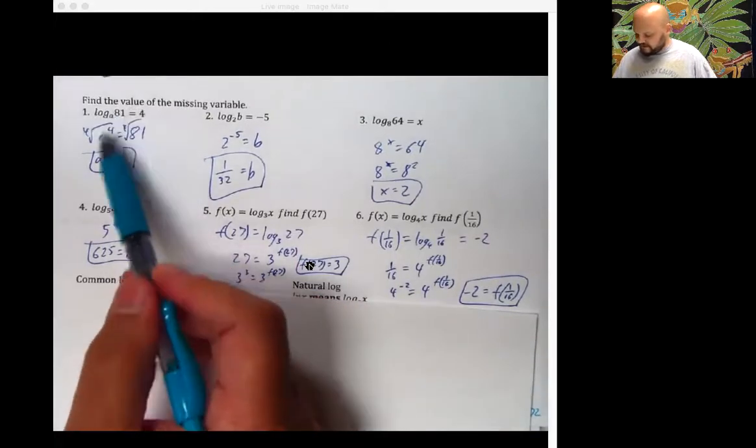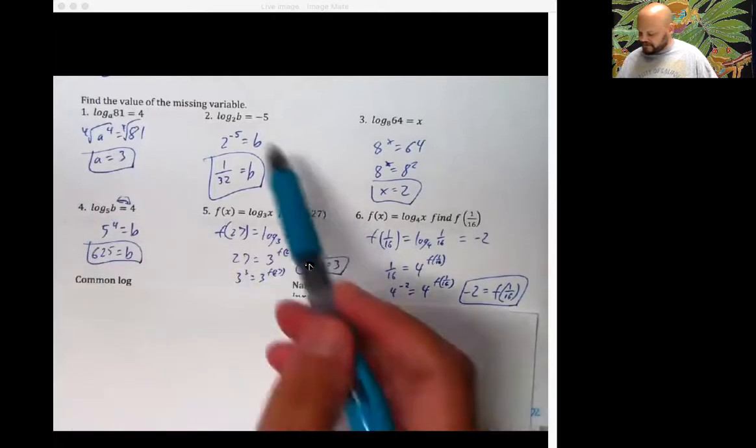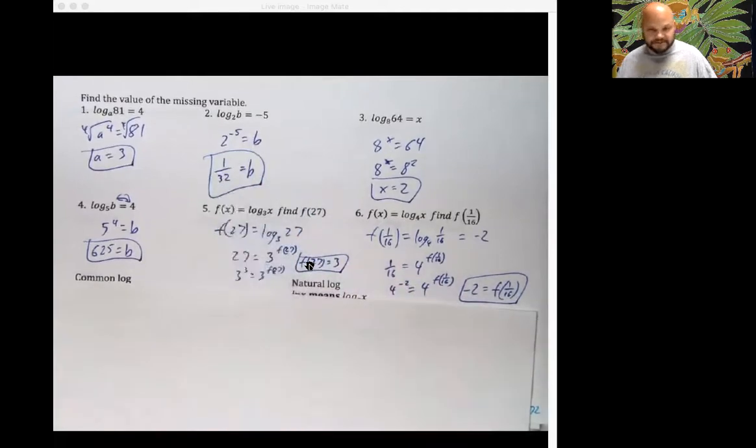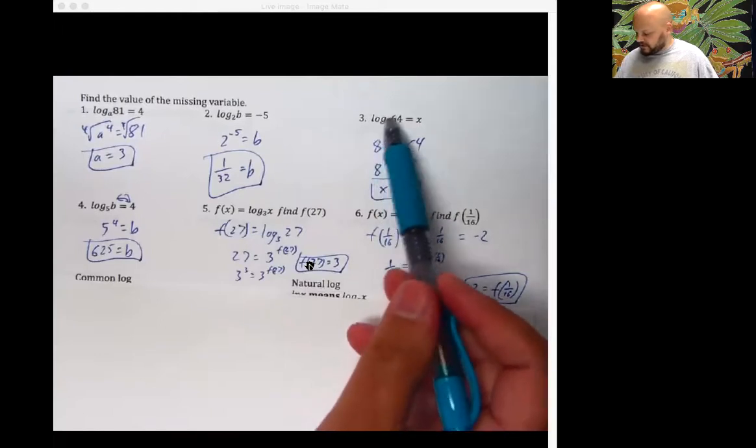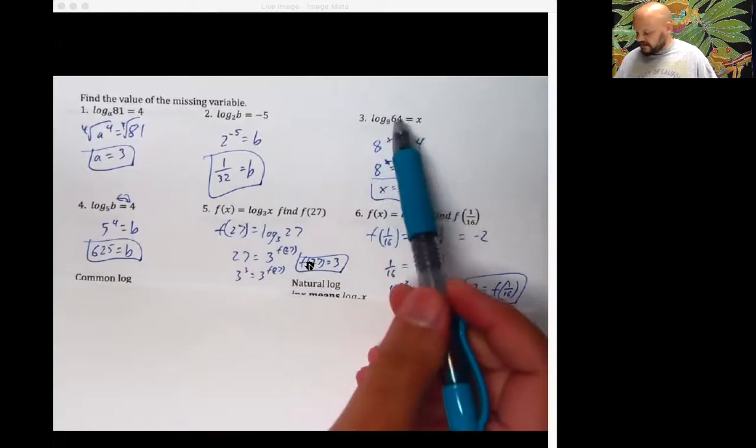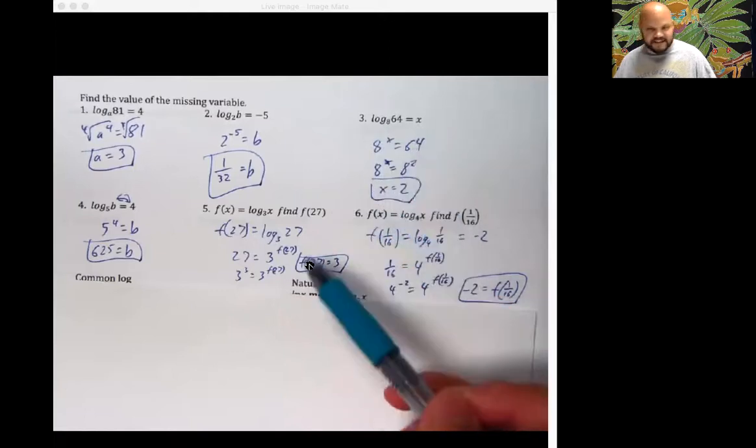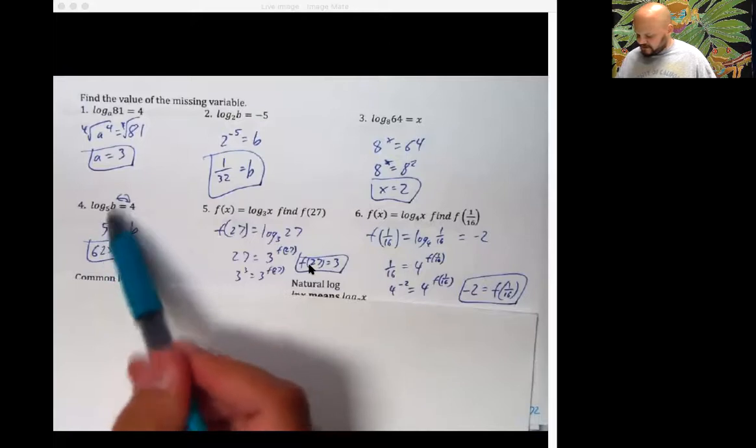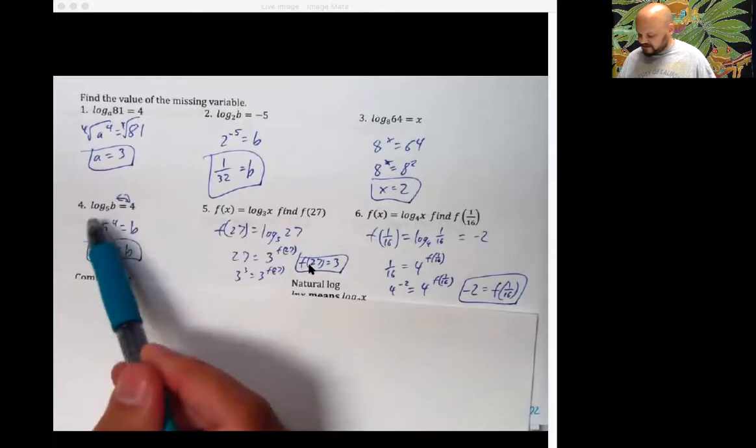You switch your stuff. A to the fourth is going to equal 81. You take the fourth root of both sides. A is equal to three. You switch your stuff. You've got two to the negative fifth power is equal to b. That's one over 32, because it flips it upside down and then takes the two to the fifth power. Over here, you switch the eight and the x, or I should say the x and the 64. Eight grows up. X becomes small. 64 is really eight to the second power, which you can do that without the work because of the way that it looks.